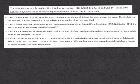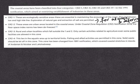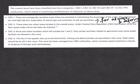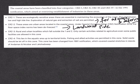CRZ 1 includes ecologically sensitive areas where no construction is allowed except activities for atomic power plants and defense. This includes ecologically sensitive areas like mangroves, coral reefs, biosphere reserves, etc. CRZ 2 includes designated urban areas that are substantially built up, where construction activities are allowed only on the landward side — these include towns and cities that are already well established. CRZ 3 includes relatively undisturbed areas, mainly rural areas, where no new construction of buildings is allowed.